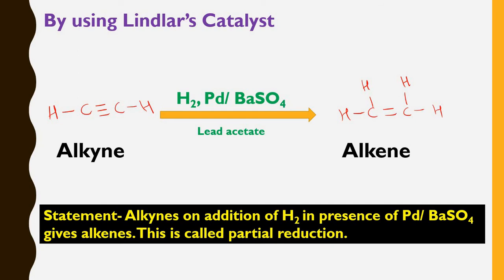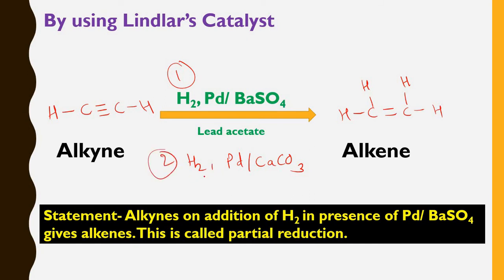This reaction is also called a partial reduction reaction. For this reaction, you may use palladium on calcium carbonate (Pd/CaCO3) as a catalyst. So these are the two options: you may use hydrogen with palladium/BaSO4, or you may use hydrogen with palladium/CaCO3. The reaction produces alkenes that are cis in geometry. Therefore, cis alkenes are obtained as a product by Lindlar's catalyst.